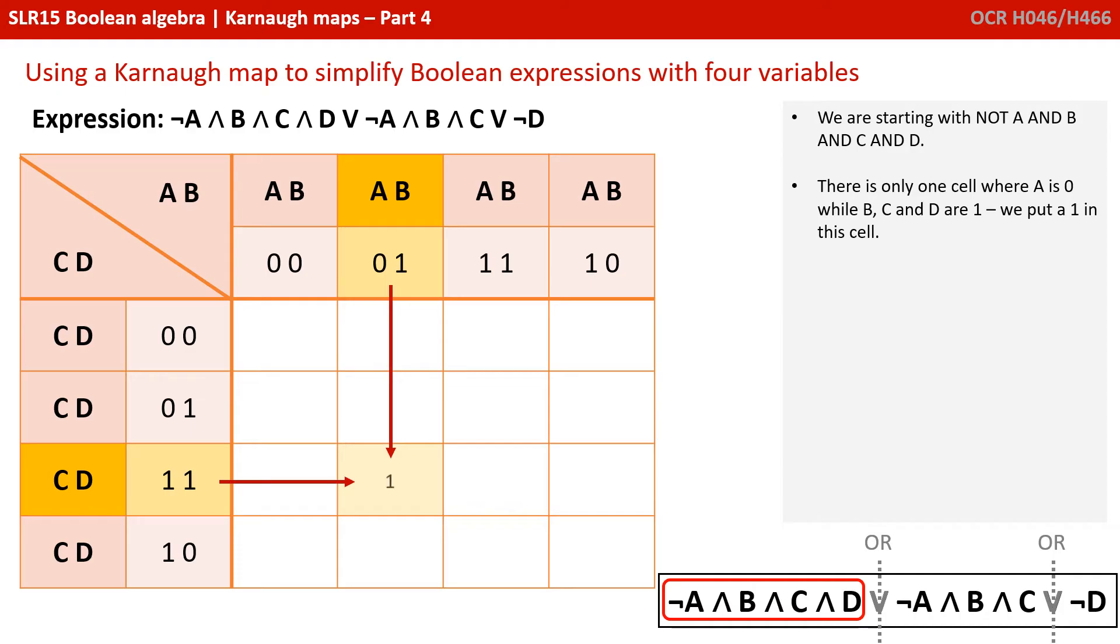We're starting with not A and B and C and D. Now there's only one cell where A is 0 because it's not A, while B, C and D are 1. So we place a 1 in that box.